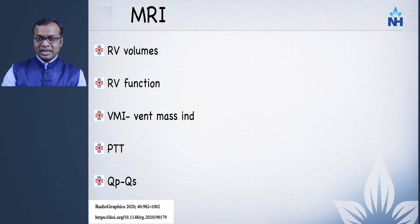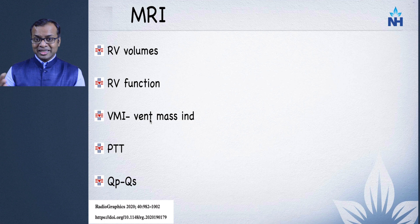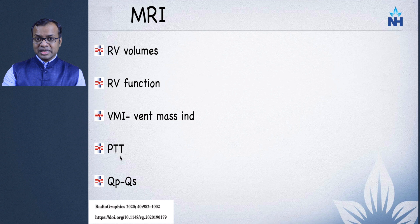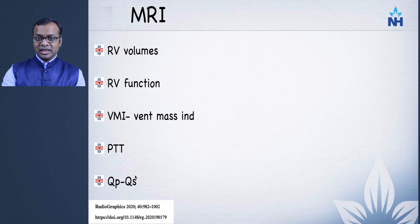MRI provides excellent functional data: right ventricular volumes, RV function, ventricular mass index to assess RV hypertrophy, and reversibility of pulmonary pressures. Pulmonary transit time is another feature to assess RV function. The QP/QS ratio — flow within the pulmonary artery compared to systemic circulation — helps assess shunts in congenital heart diseases.